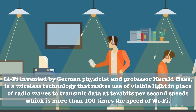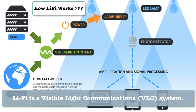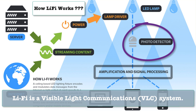The next question is how Li-Fi technology works. Li-Fi is a visible light communication system. It accommodates a photo detector to receive light signals, and a signal processing element to convert that data into streamable content. The photo detector receives the light signals, and the signal processing element connected to it converts the data into streamable content.